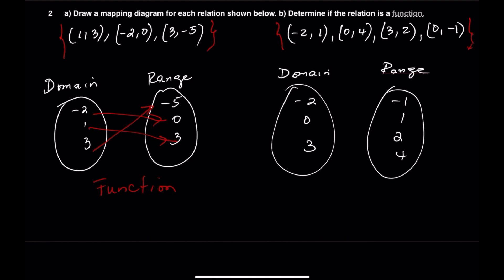In this relation, negative 2 mapped to positive 1, 0 mapped to 4, 0 mapped also to negative 1, and 3 mapped to 2. Here we can see that the input 0 is repeated and paired with two different outputs. Because one input gives two different outputs, this relation is not a function.